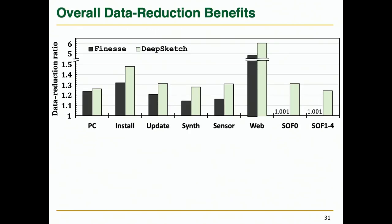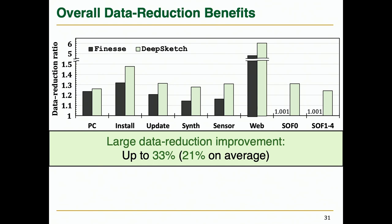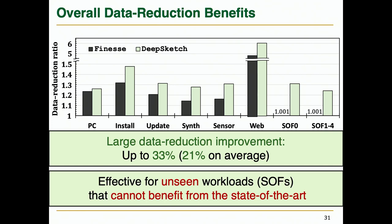This graph shows the average data reduction ratio of Finis and DeepSketch normalized to the simple combination of deduplication and lossless compression. We observed that DeepSketch provides a large data reduction improvement over the state-of-the-art technique. We also make two other interesting observations regarding the Stack Overflow results. First, DeepSketch can provide high benefits even when the workloads are not used in its DNN training, which shows its high generality for unseen workloads. Second, unexpectedly, DeepSketch can significantly improve the data reduction ratio even for workloads that cannot benefit from Finis.